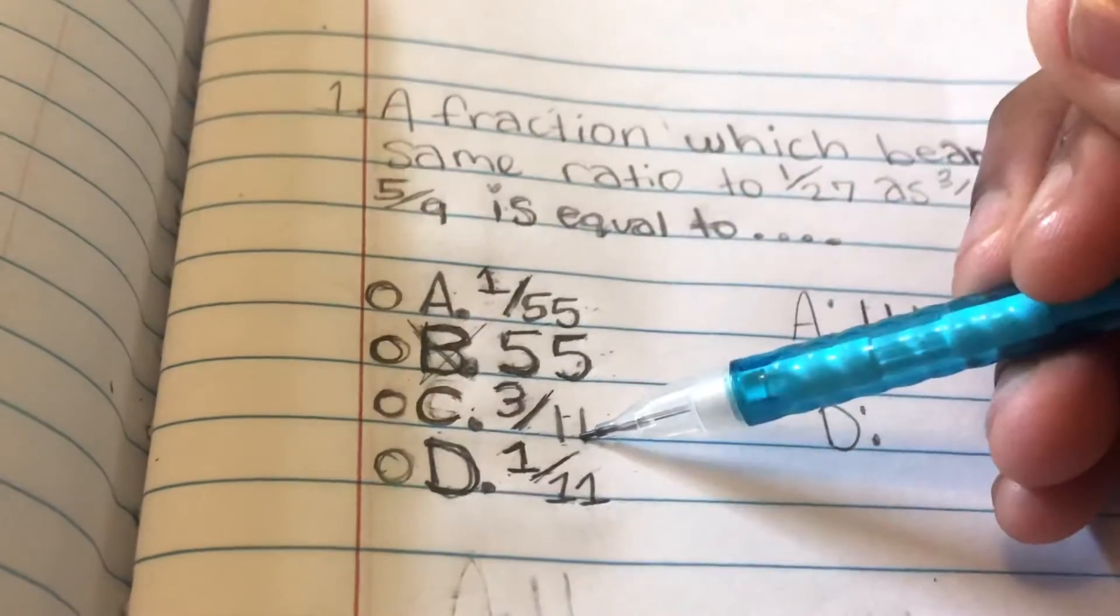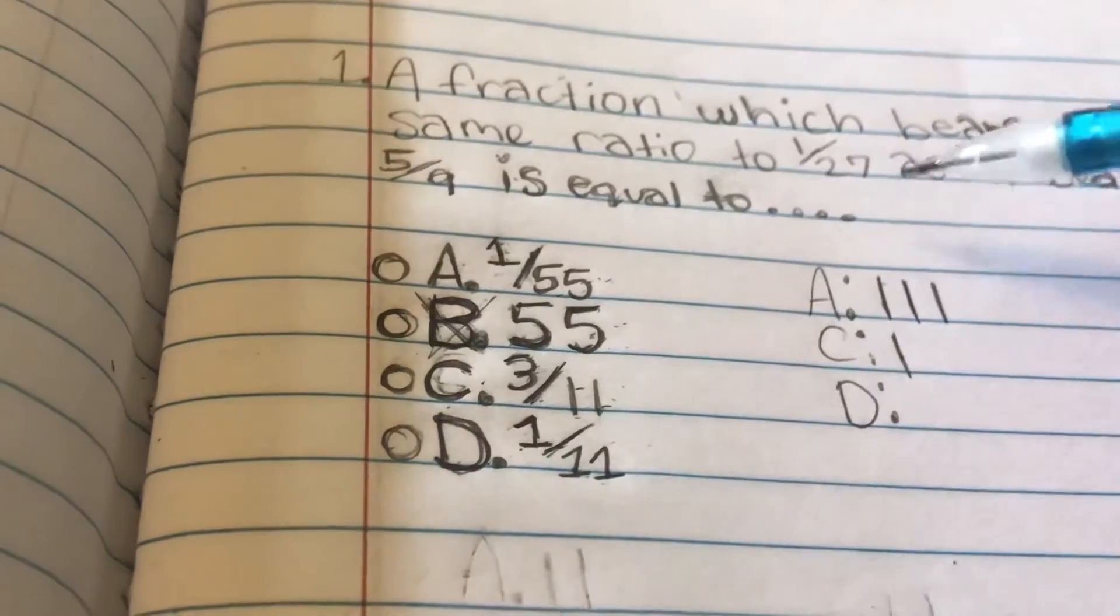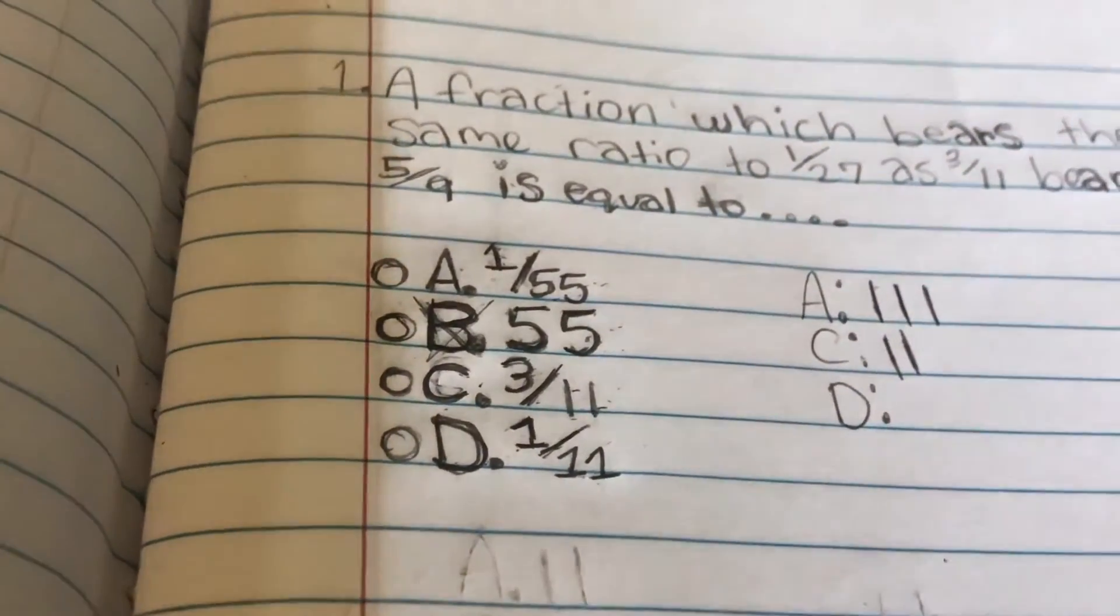We look at 11. D has 11 in it, so we can put one for that. Also, we can put a one for the fraction too, because C is a fraction.